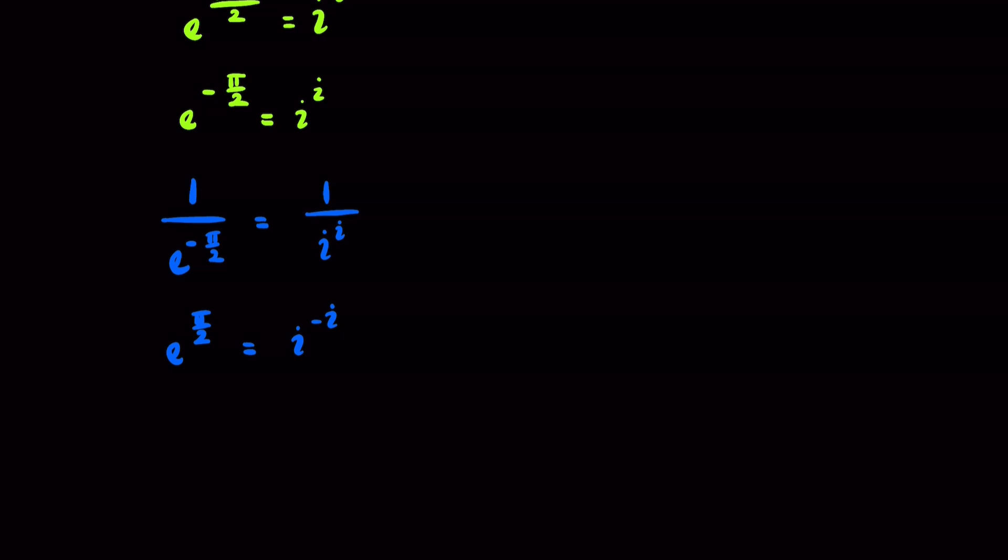Well, what is negative i? Let's take a look at the following. So, if we had i squared, that would just equal negative 1 because i is the square root of negative 1. And so, we would have i times i equal to negative 1. Therefore, i is equal to negative 1 over i.